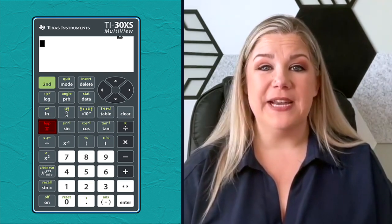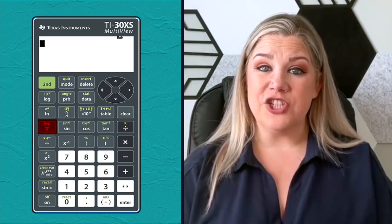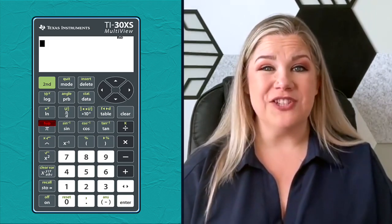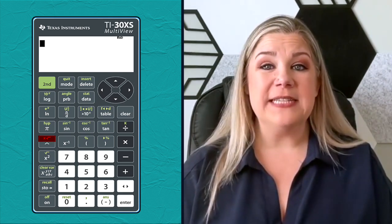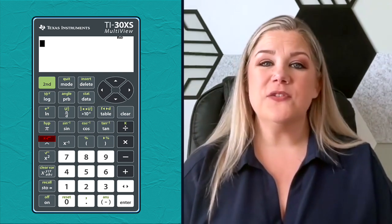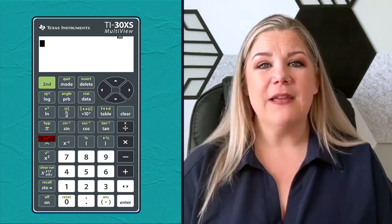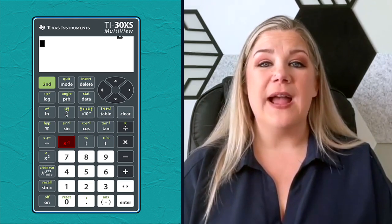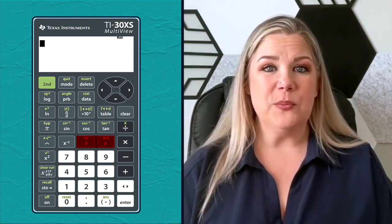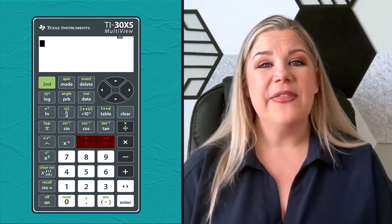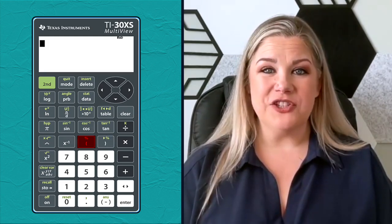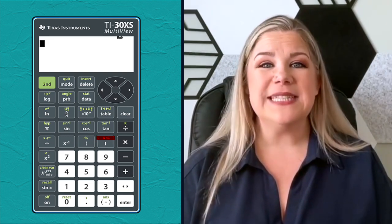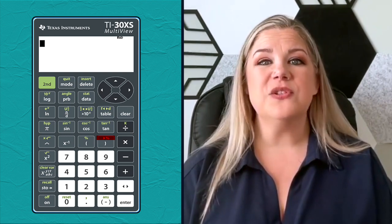Below that is the pi key for geometry and circular functions. Its secondary function, hyp, is used for hyperbolic trig functions. Next, you have the caret symbol to raise numbers to a power. Its secondary function is the x or n root, for when you need to find a root other than a square, like a cube root. Next to that is the reciprocal function that lets you find one divided by a number. You'll also see two parentheses keys — one faces right, the other left — for grouping expressions to control the order of operations. The secondary function of the right-facing parenthesis is percent, and the left-facing one converts a decimal to a percentage.